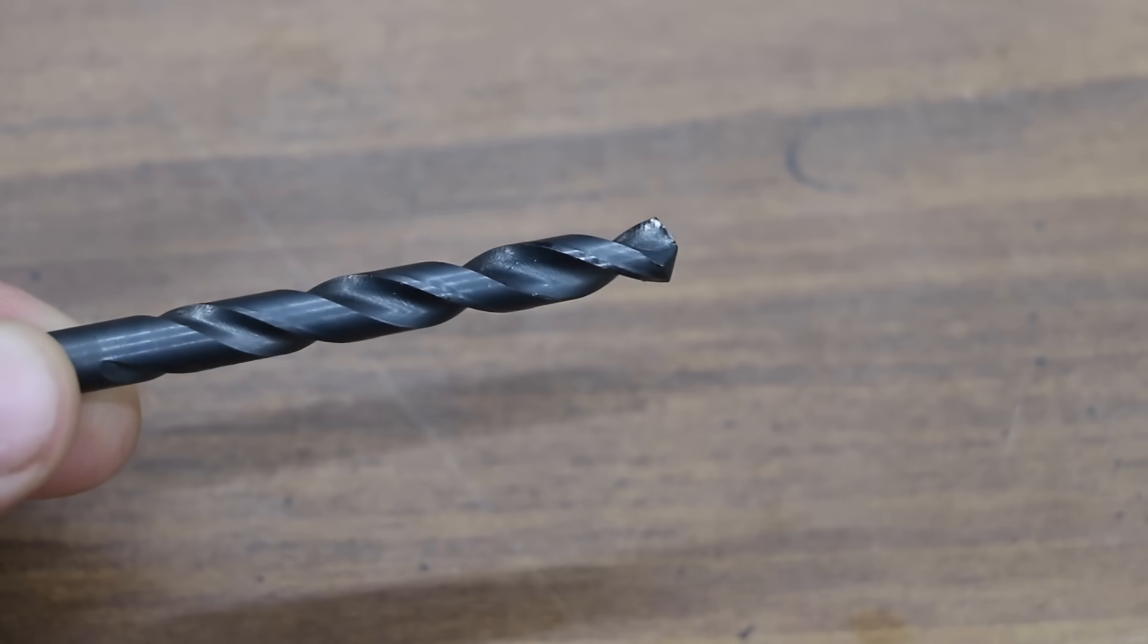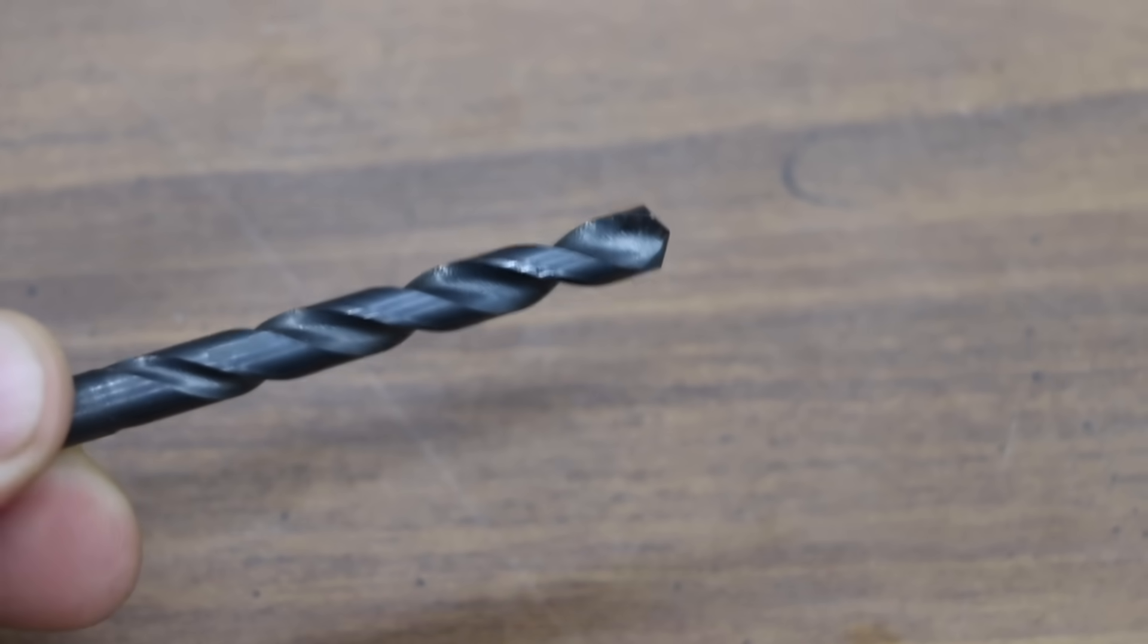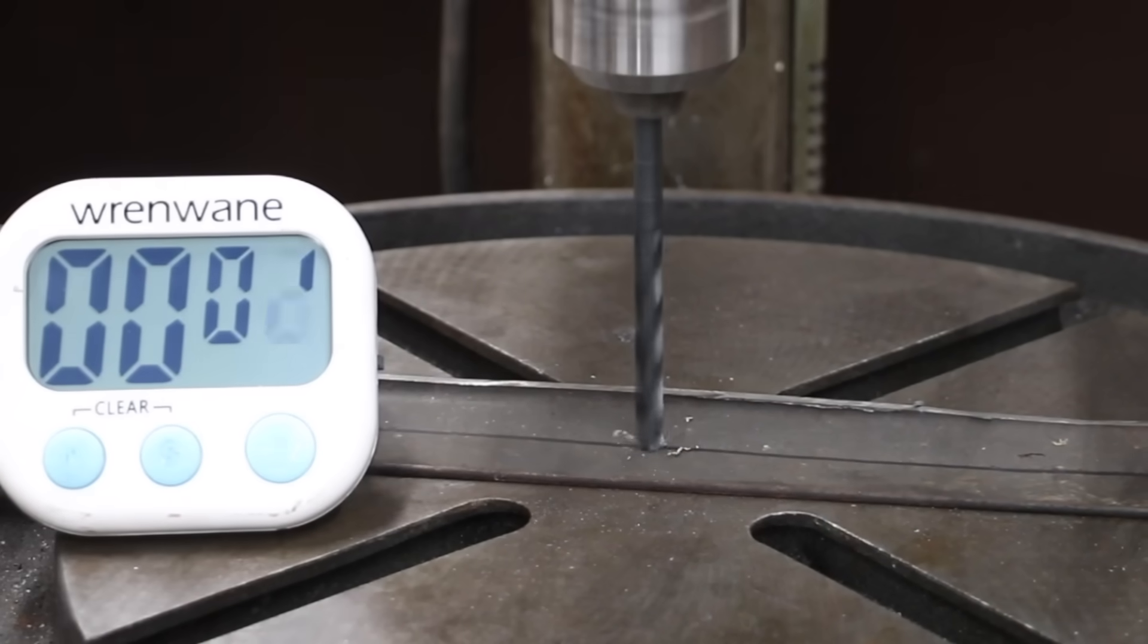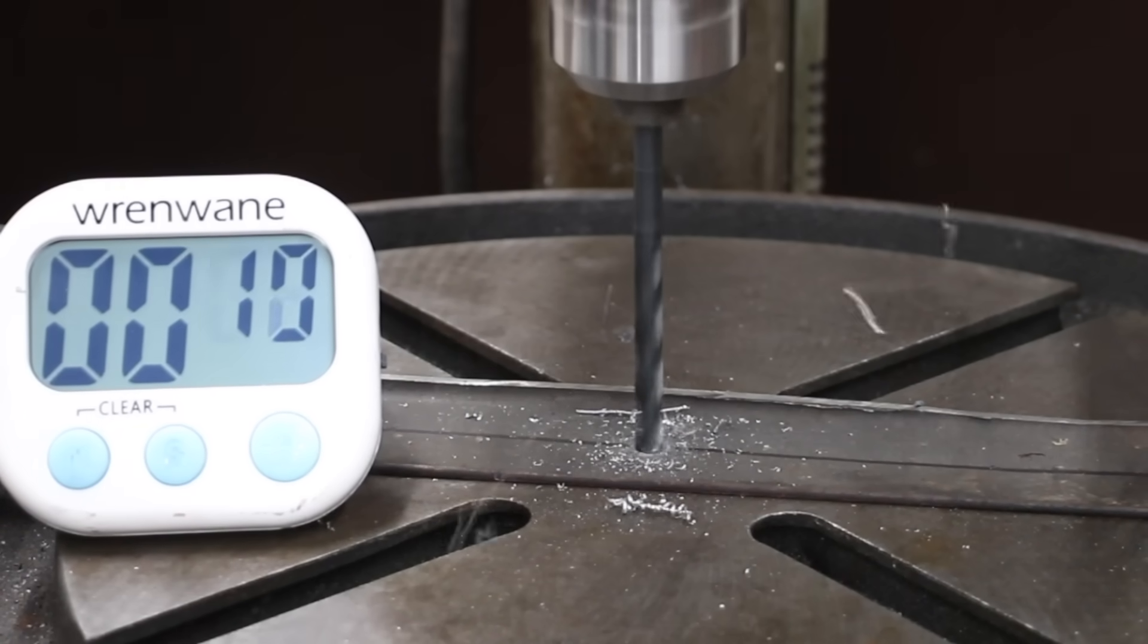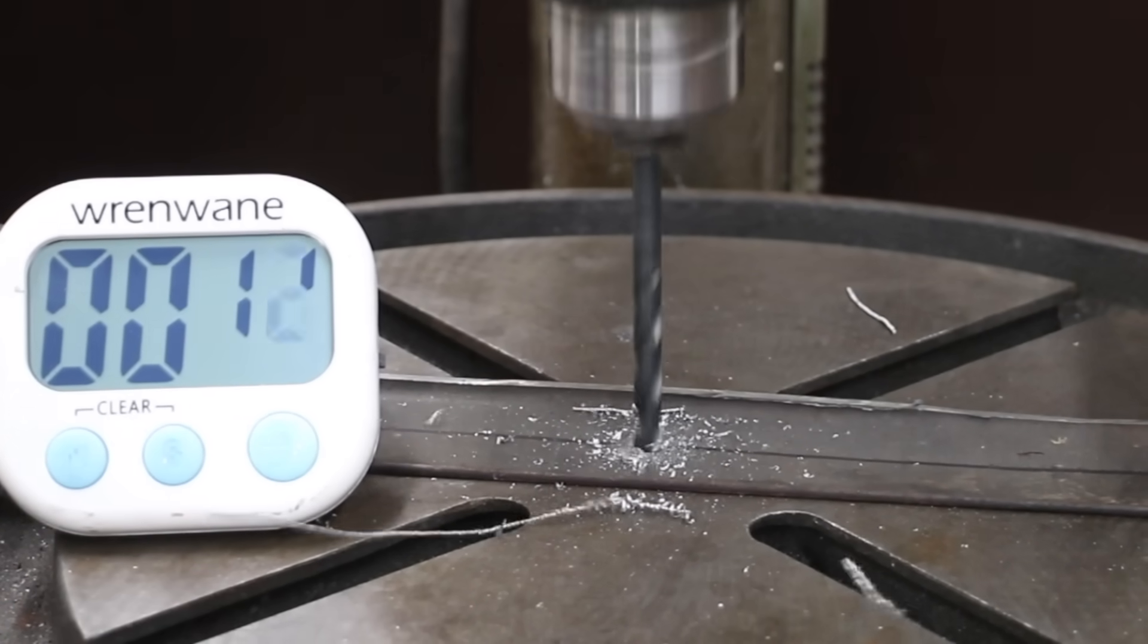Once again, we'll use the same quarter inch DeWalt twist drill to serve as our baseline for cutting through the medium hardness steel. Even though the steel is half the thickness compared to the previous test, it took the DeWalt three seconds longer. Let's test the Harbor Freight Drill Master first.